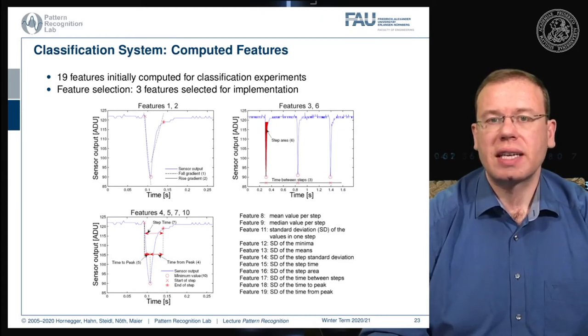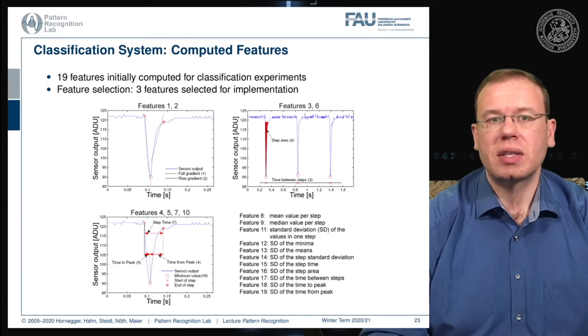We can also visualize this in a three-dimensional space because we have three features. Here you can see the hard and the soft surface classes, and they form approximately Gaussian classes. We can very nicely apply our theory now, so we get the decision boundary and simply decide we are on one side or the other side of the decision boundary.